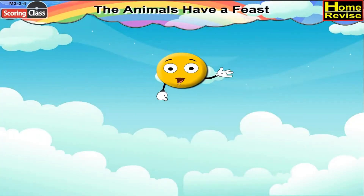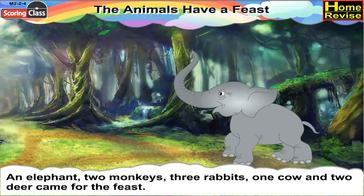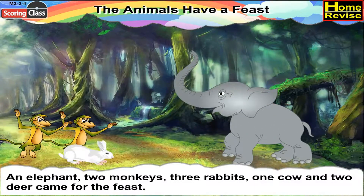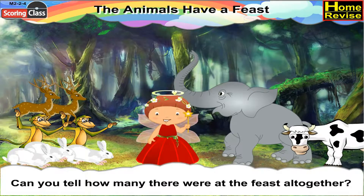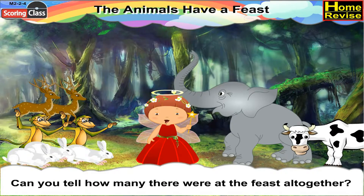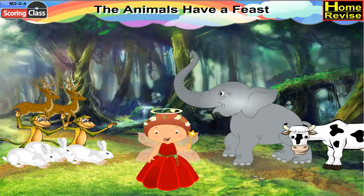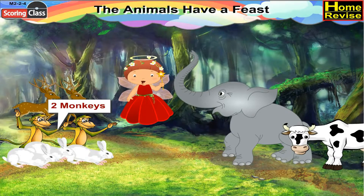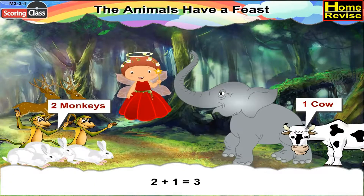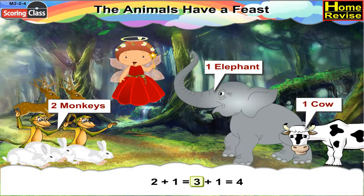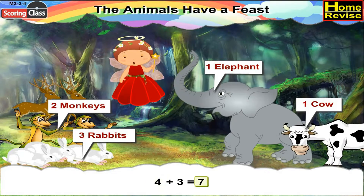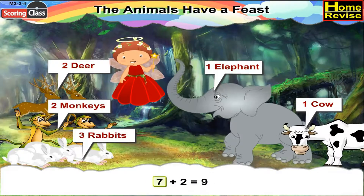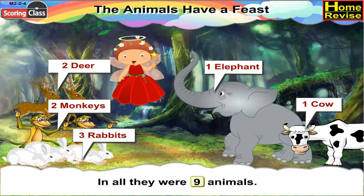The animals have a feast. An elephant, two monkeys, three rabbits, one cow and two deer came for the feast. Kids, can you tell how many there were at the feast altogether? Let us count: two monkeys and one cow — two plus one makes three. One elephant — three plus one makes four. Three rabbits — four plus three makes seven. And two deer — seven plus two is equal to nine. In all there were nine animals.